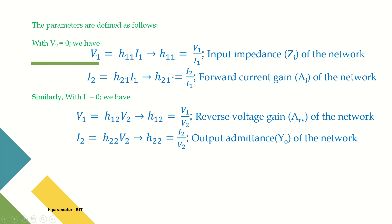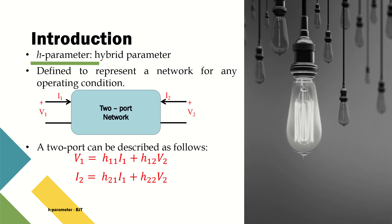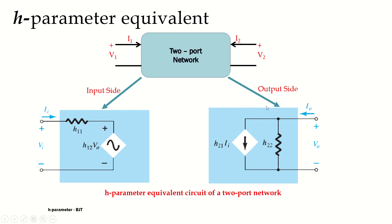So the four parameters H11, H12, H21, H22 each describe a different characteristic of the two-port network: input impedance, forward current gain, reverse voltage gain, and output admittance. The first equation can be considered a KVL equation and the second a KCL equation, from which we can derive an equivalent circuit model for the two-port network.